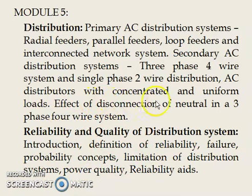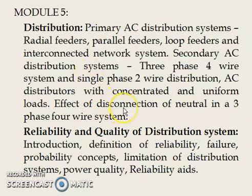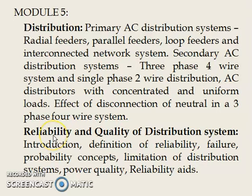AC distributors with concentrated and uniform loads, effect of disconnection of neutral in a three-phase four-wire system — we will be studying these in distribution, specifically AC distribution system only. We have two types of distribution — DC distribution as well as AC distribution — but we will be studying only about AC distribution; DC distribution is not in the syllabus. The second part of module 5 deals with reliability and quality of distribution system.